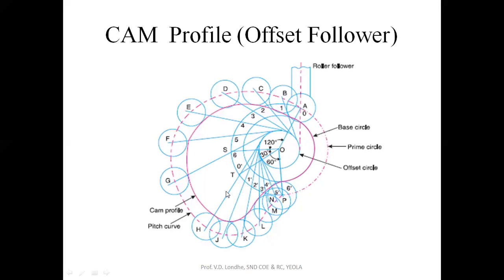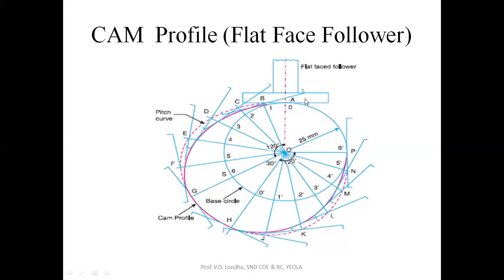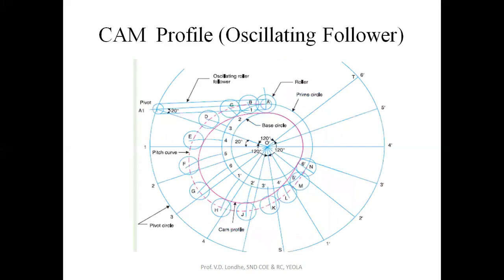This is the basic difference between the radial follower and the offset follower. Next is the flat face follower. For the flat face follower, the trace point will be on the base circle. Divide the rise angle and return angle — no division needed for the dwell. Take distances from the displacement diagram and mark them on the projections. Draw perpendicular lines to these projections at each distance point, because the flat face of the follower is perpendicular to the center line of the follower. Using a French curve, take the lower portion of the lines coming in contact to draw a smooth cam profile.